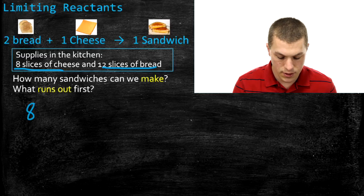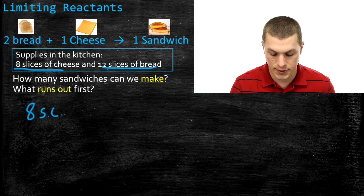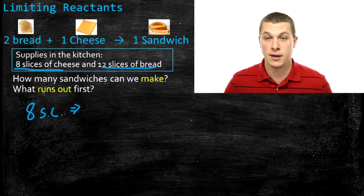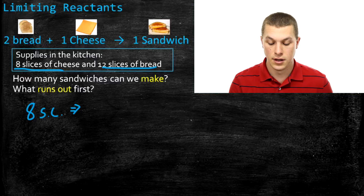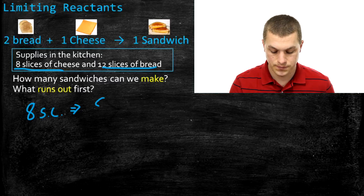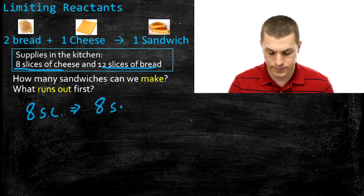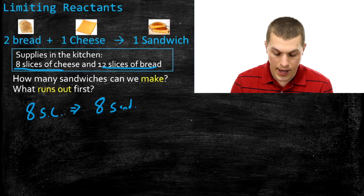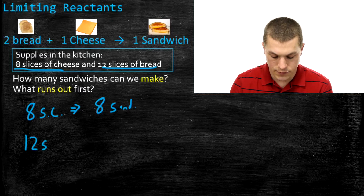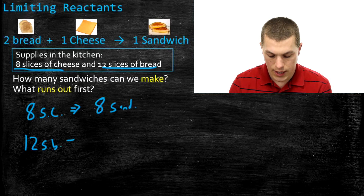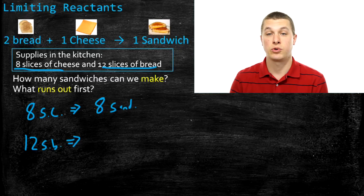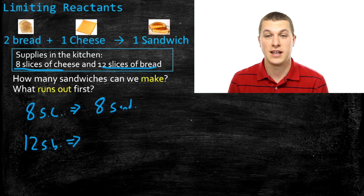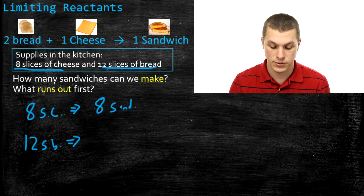First, let's think about the cheese. I have 8 slices of cheese (SC), and my recipe tells me that for every slice of cheese I can make one sandwich. So with 8 slices of cheese, I can make 8 sandwiches. On the other hand, I have 12 slices of bread (SB). Each sandwich requires 2 slices of bread, so I divide 12 by 2 and get 6 sandwiches.